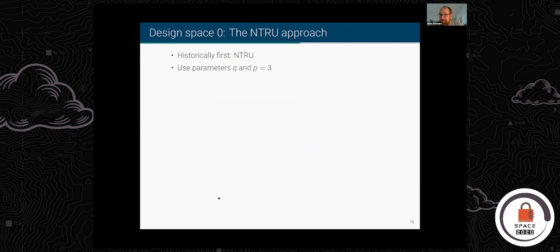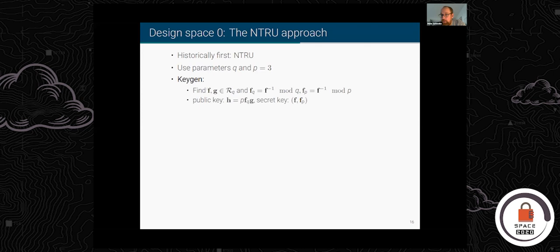Now for the design space. First, we can actually do something different from what I just showed — we could use the NTRU approach. NTRU is historically the first lattice-based encryption scheme we're still using today, proposed in the 90s. It uses two parameters, q and p, where p equals 3. NTRU generates two polynomials in this polynomial ring and inverts f modulo q and modulo p. If f is not invertible, you try again. The public key is p·fq·g, where fq is the inverse of f modulo q and g is the other polynomial sampled. The secret key is f and fp.